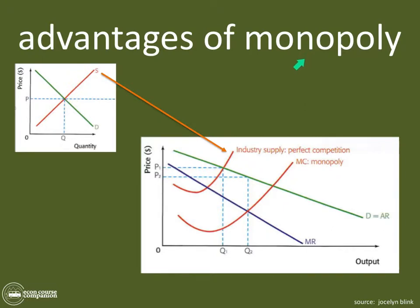So the advantage of a monopoly is that it could possibly be better for society to have a monopoly in certain cases than to have perfect competition. An economist would say this is because monopolies have the advantage of economies of scale. Because of economies of scale, a monopoly could produce the good at a lower cost and therefore sell it at a lower price than if the industry were under perfect competition.